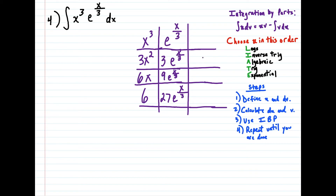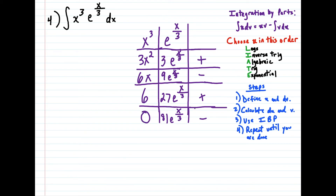This has been called the tic-tac-toe method in the past, but the way that it works is the signs alternate. So it starts off here — we're going to write a plus, minus, plus, minus — and I have to go one more row down here for the antiderivative. I'm going to need another one. So the next line here, times 3 again, would be 81e^(x/3), because the derivative of 6 is just zero. So we're going to need to go down to the fourth row here. And remember, these just alternate plus, minus, plus, minus.